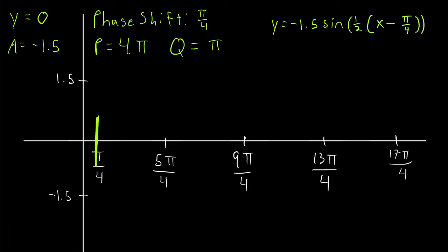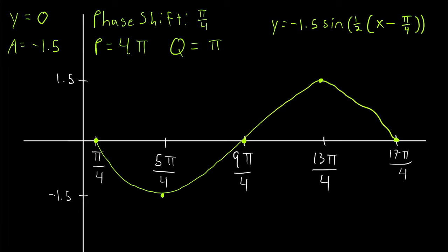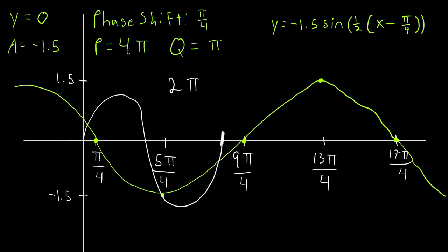The sine function starts at the phase shift at the midline. Since it's multiplied by a negative number, instead of going up to its peak it goes down to its lowest point first, then back up to the midline, up to its peak, and back down to the midline to finish the period. We sketch that single period. Note that a typical sine function has a period of 2 pi, so we can really see how this function is stretched out by that one half.